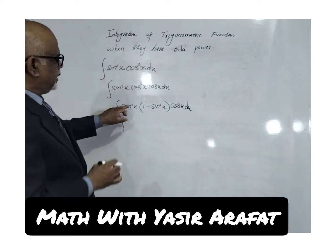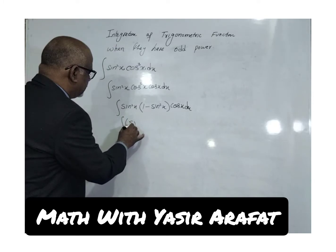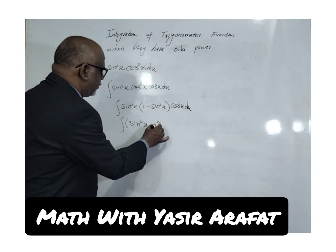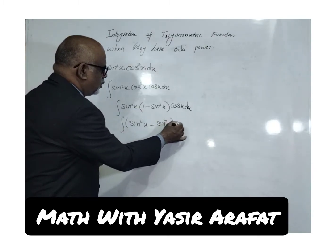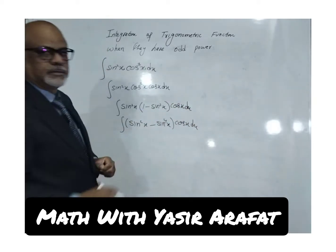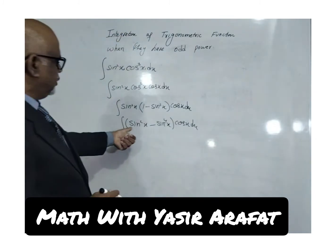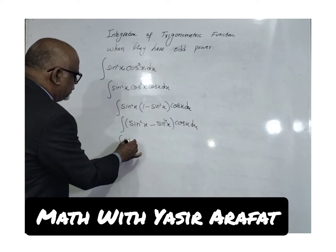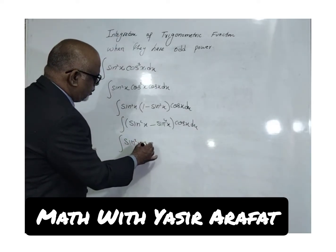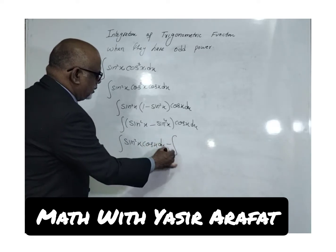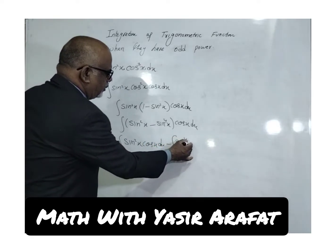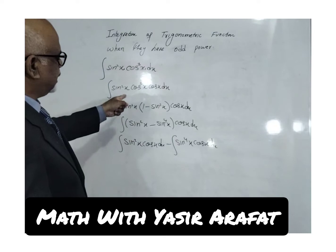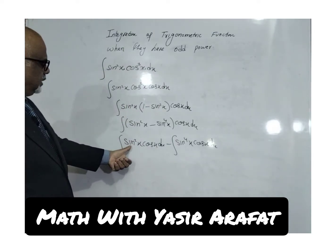Now we multiply sin²x by the bracket (1 - sin²x). Sin²x times sin²x gives sin⁴x. So the integrand expands to: sin²x · cos x dx minus sin⁴x · cos x dx.